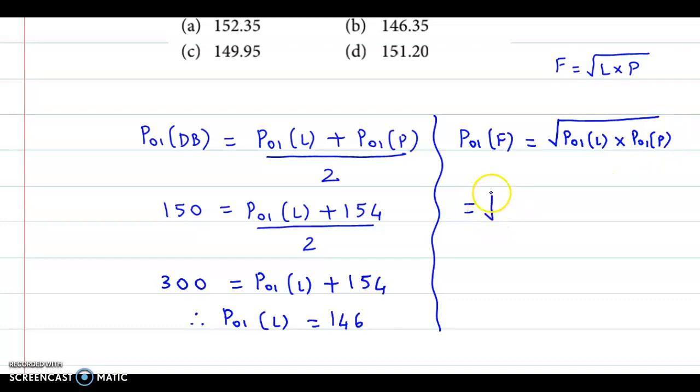Now we have calculated the Laspeyres index, which is 146. Paasche's index is already given to us, that is 154. We multiply this by square root. 146 into 154. If we take root value, we get 149.946, which is approximately 149.95.